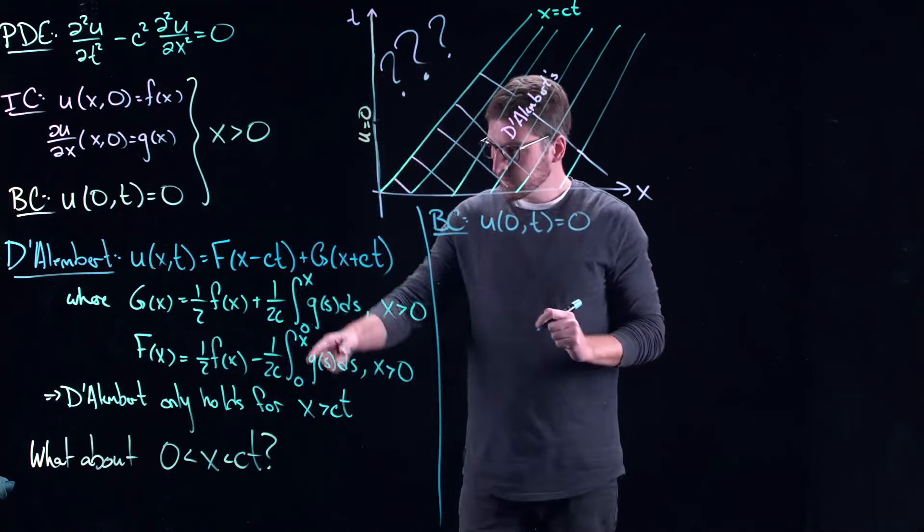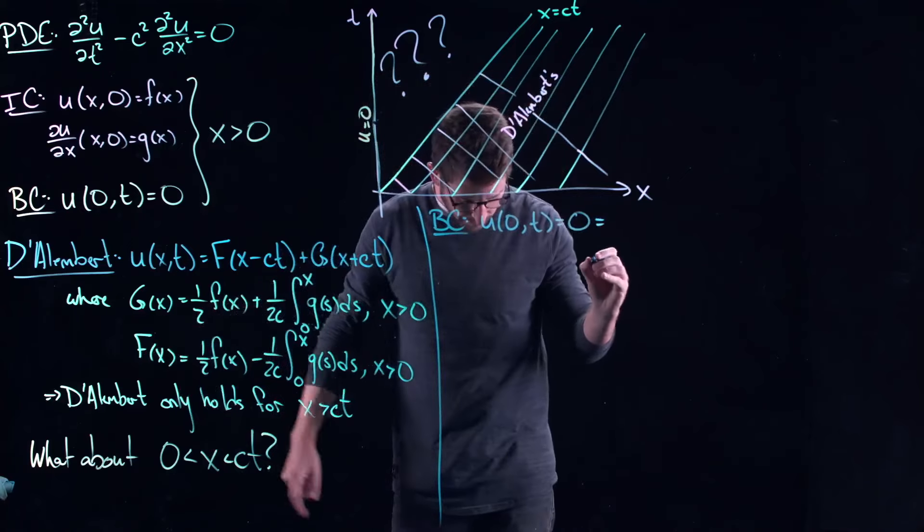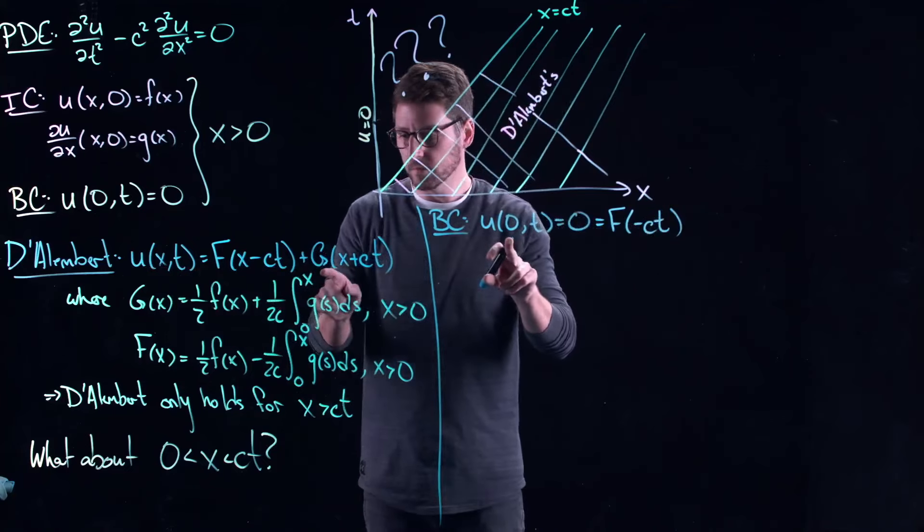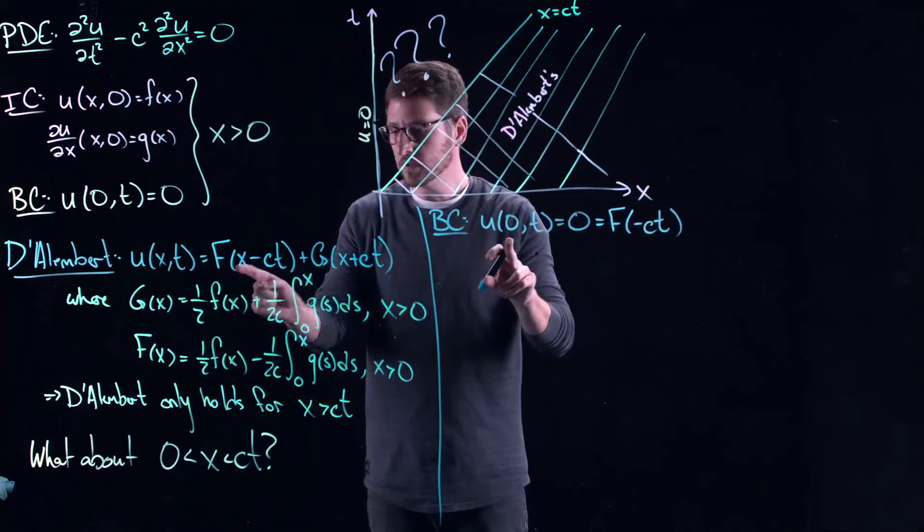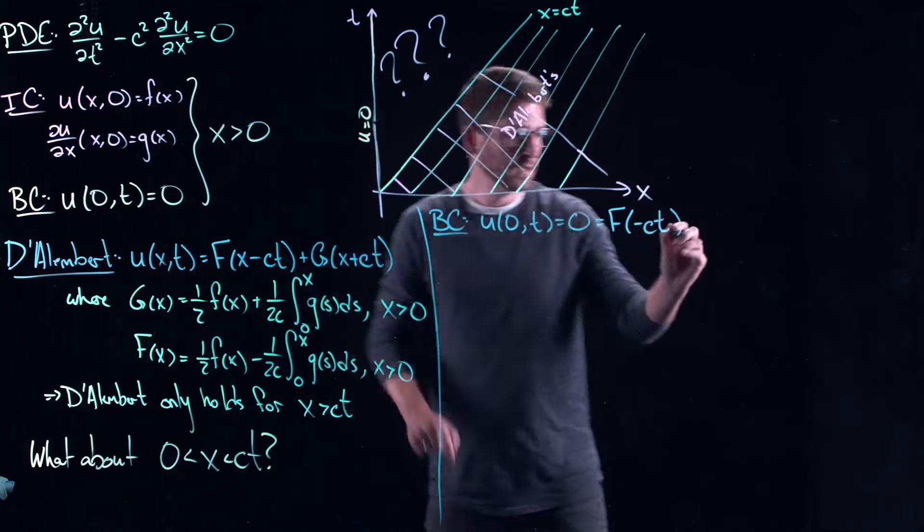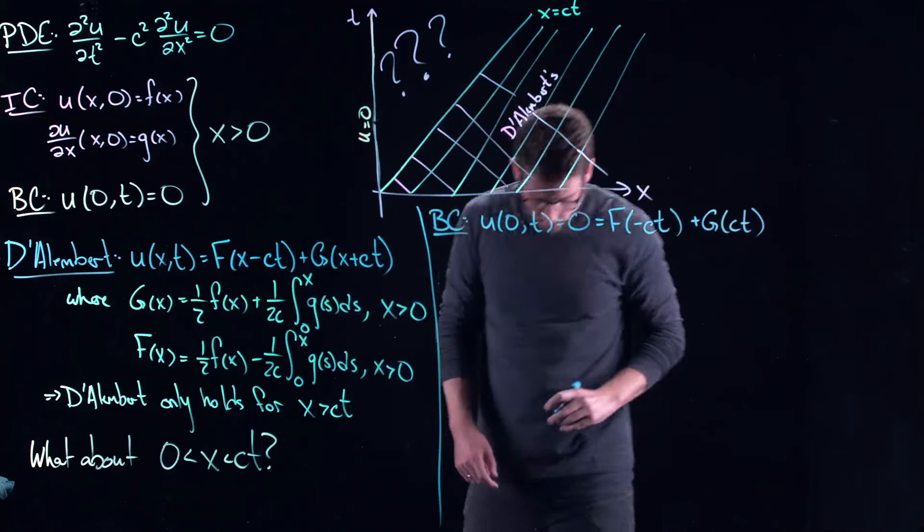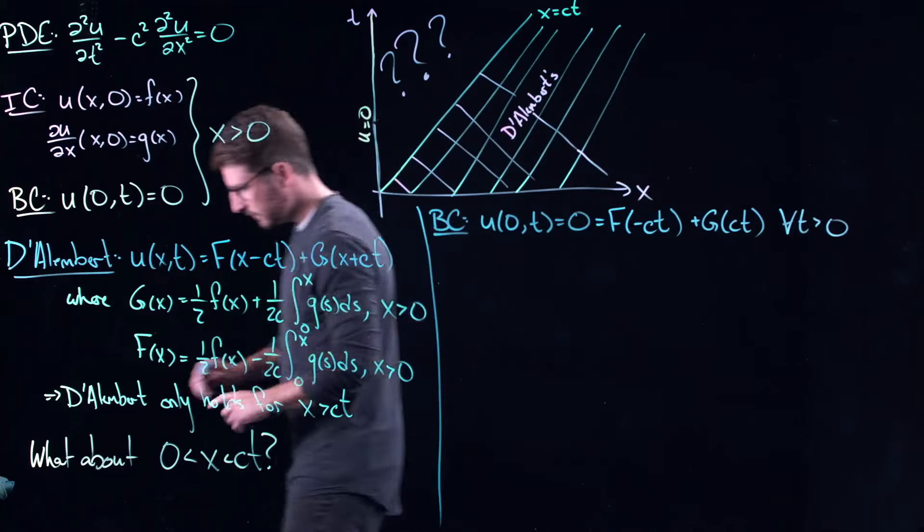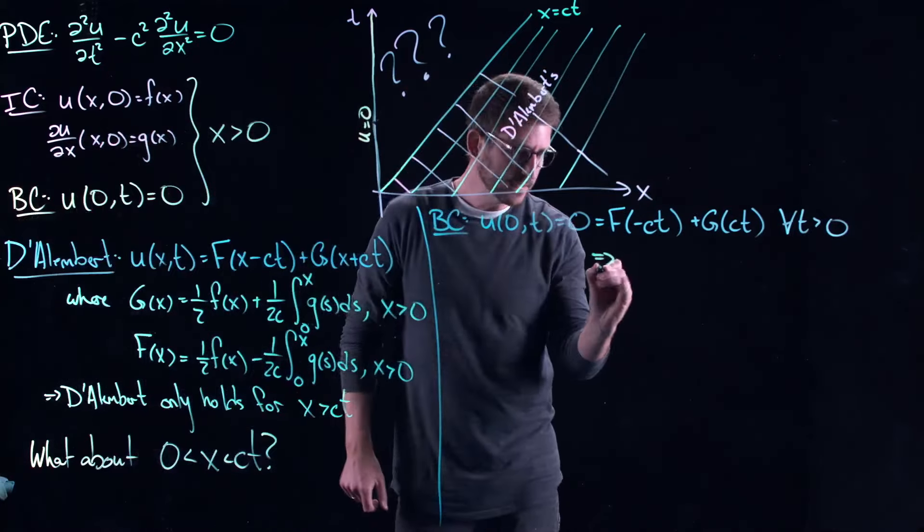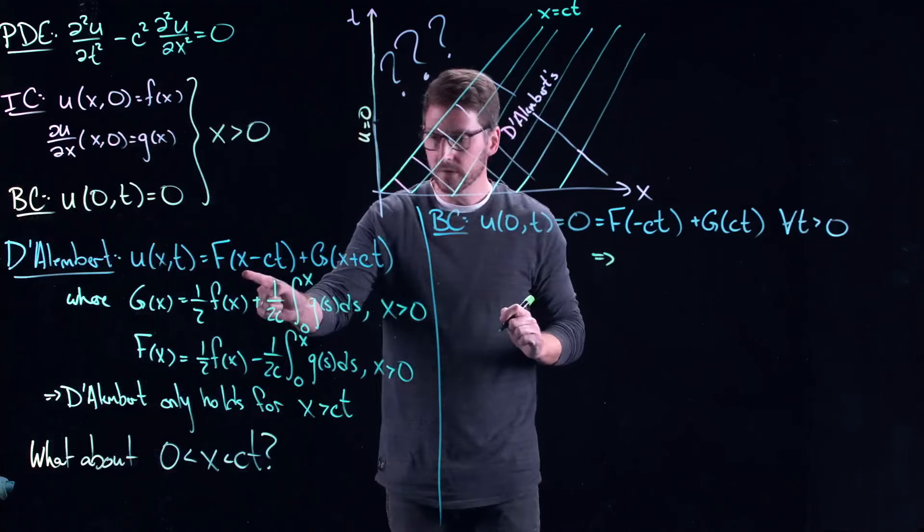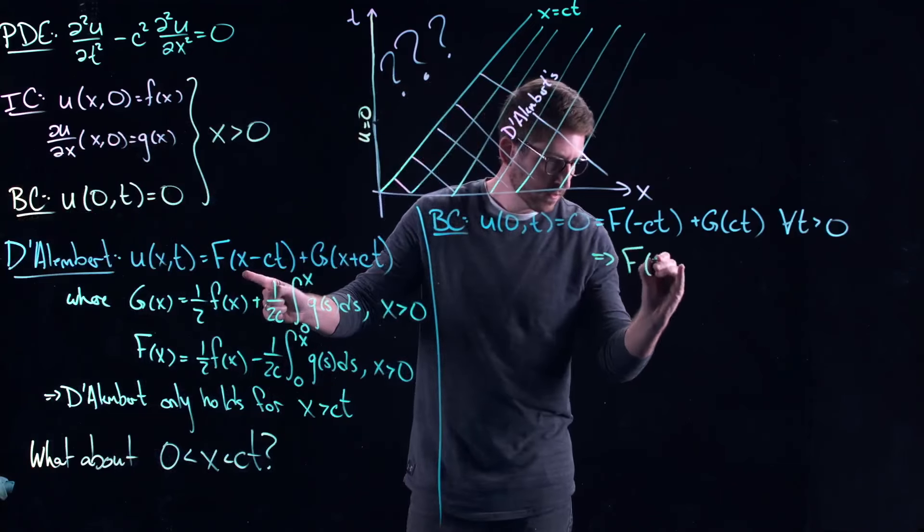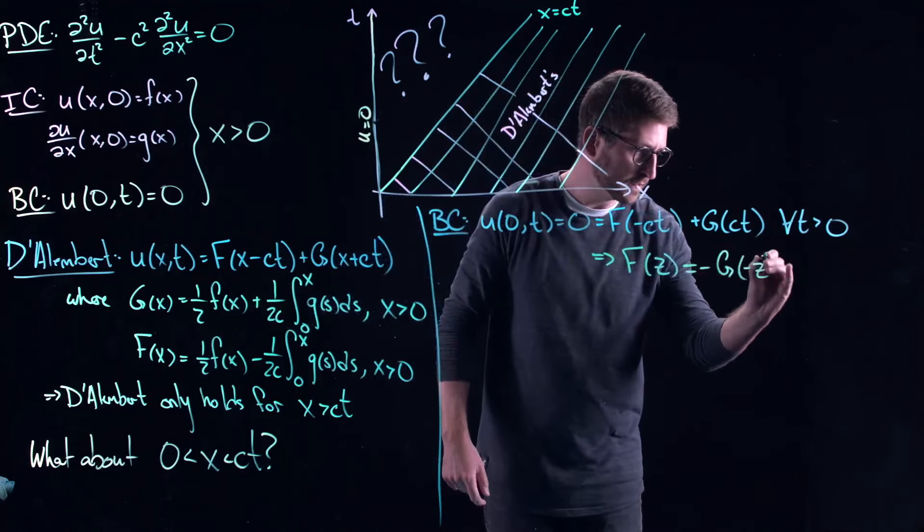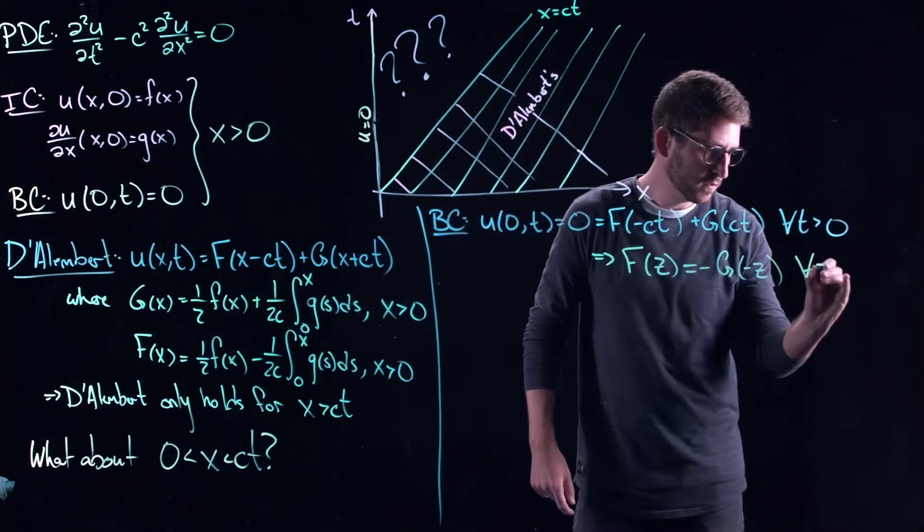And from D'Alembert's solution, this is equal to f of minus ct. Remember, the original solution to the equation is f of x minus ct plus g of x plus ct. At x equal to 0, I get f of minus ct plus g of positive ct. And this is for all t greater than 0.